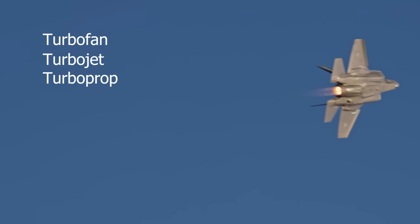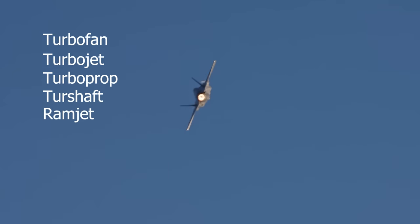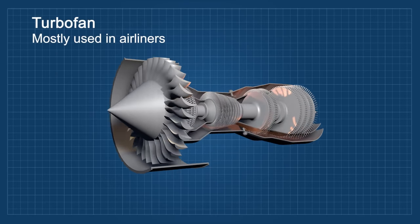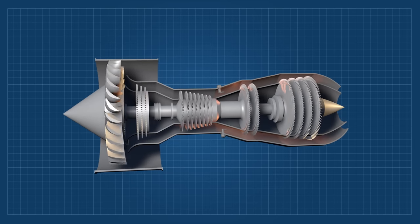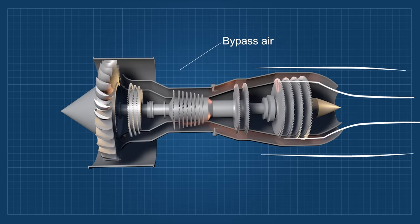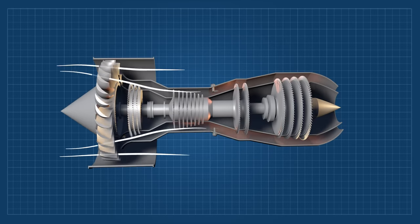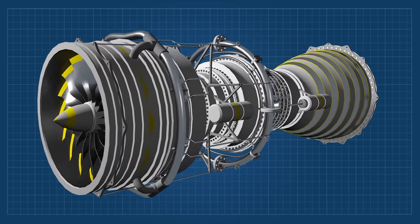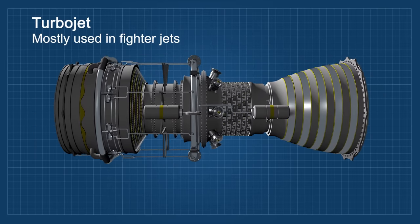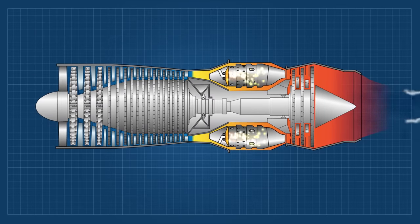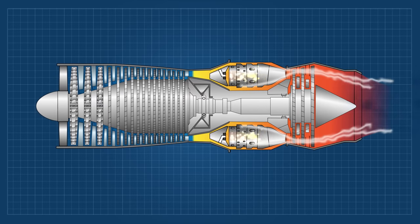Nowadays there are many types of jet engines: turbofan, turbojet, turboprop, turboshaft, and ramjet engines. The most used in civil aviation is the turbofan engine. In this type, there is a large fan at the front that sucks all the air in, most of which is used to generate thrust and only a small percentage actually goes into the combustion stage. The advantage is that it is a lot quieter and more efficient for subsonic speeds. The turbojet engine uses all the air that gets in for the combustion process — it's very powerful and very noisy, but somewhat smaller than the turbofan engine.